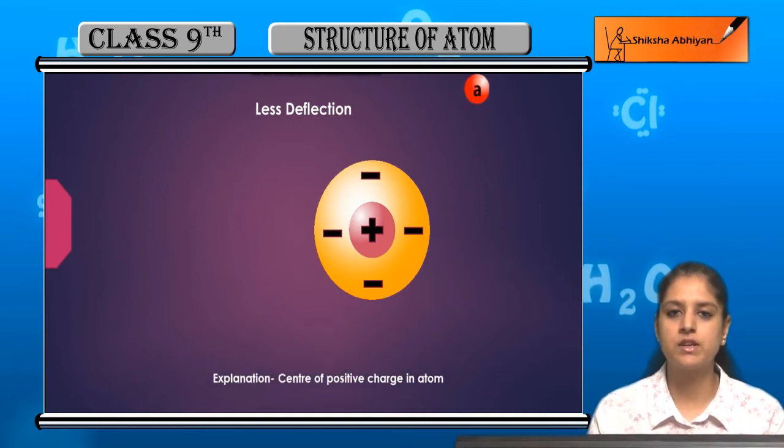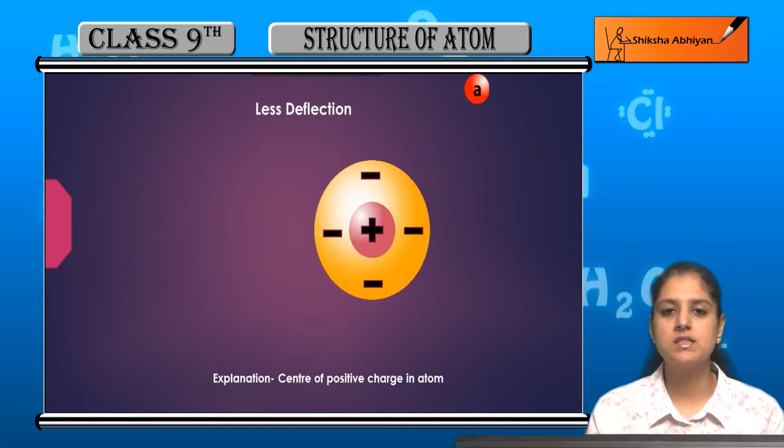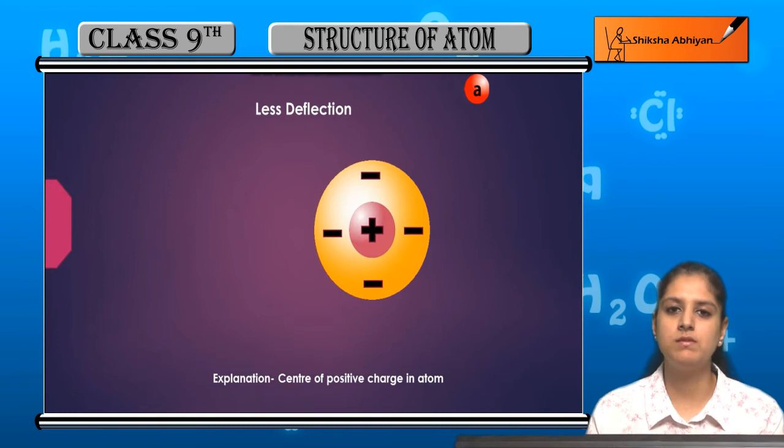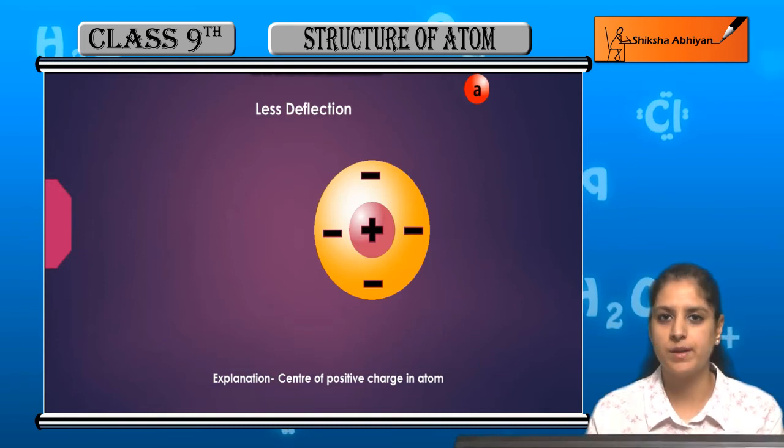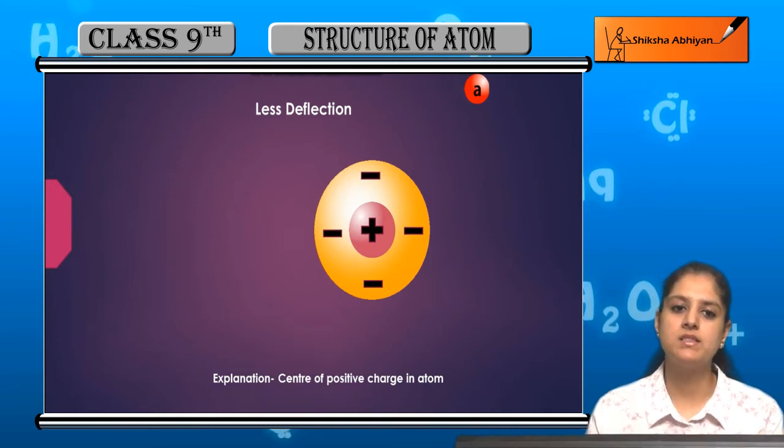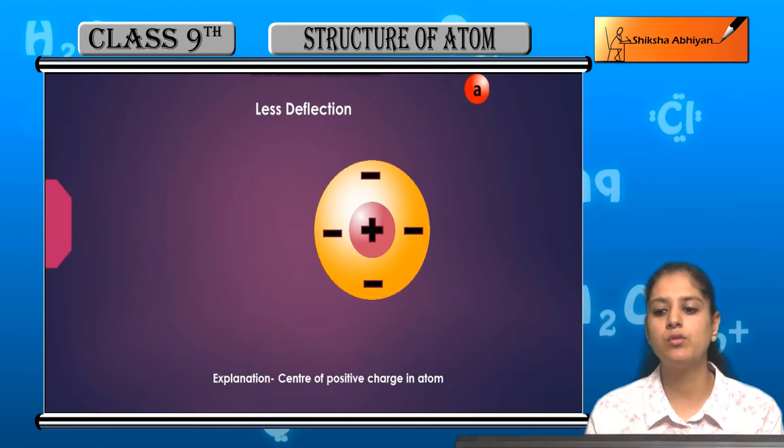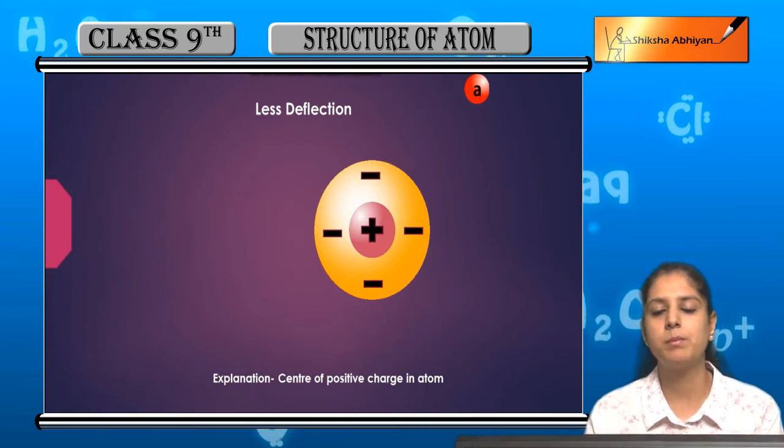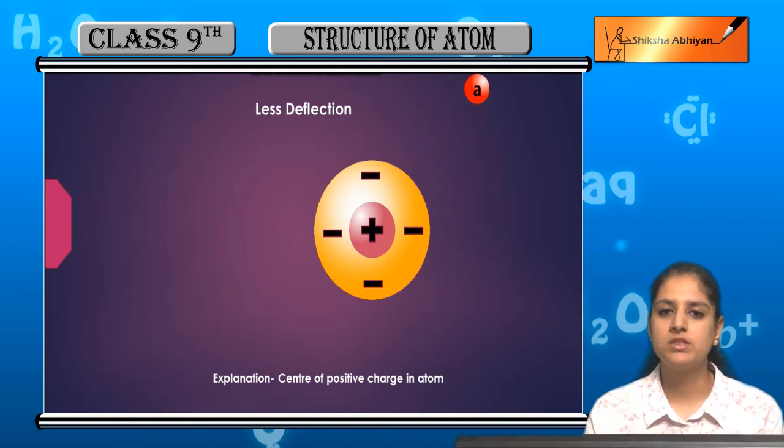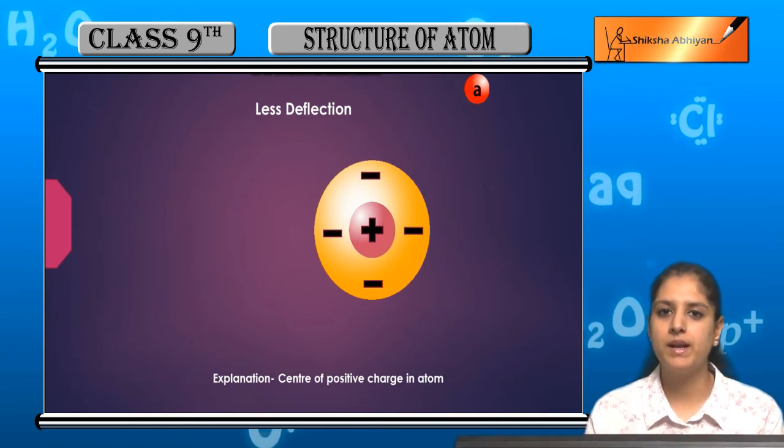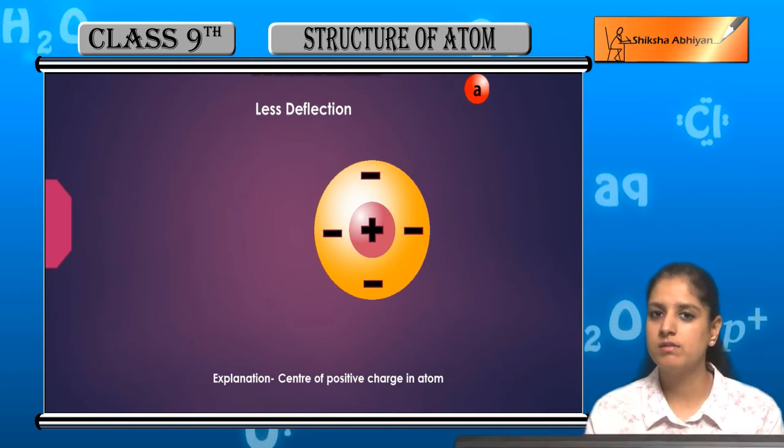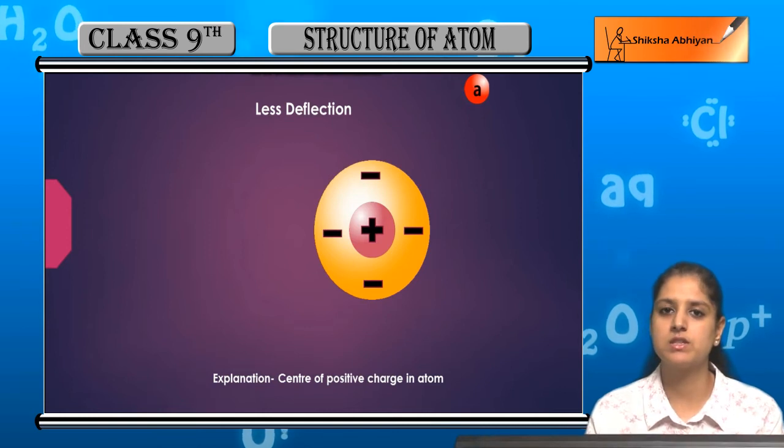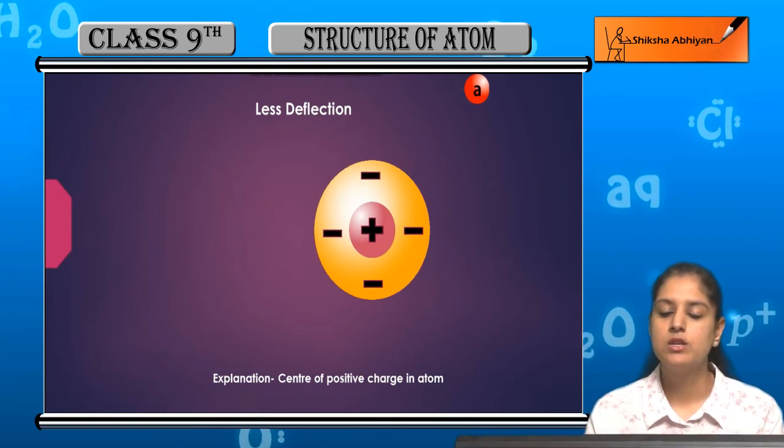The reason for this deflection was that there is a center of positive charge in the atom. Because alpha particles are positively charged, if they are deflected, it means they are being repelled. This indicates there is another positively charged body causing the deflection.